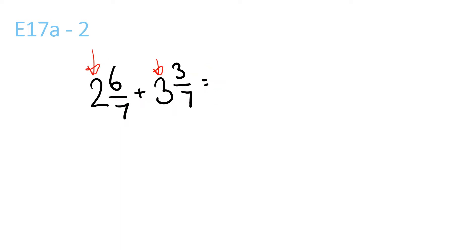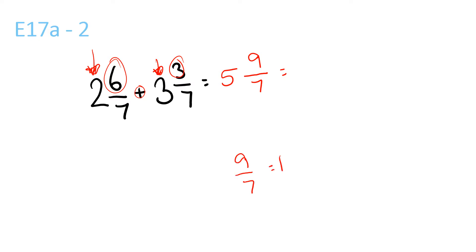2 plus 3 is 5, over 5. And 6 plus 3 is 9 over 7, which is equal to 1 and 2 over 7, because 7 goes into 9 once, remainder 2 over 7. So you get 1 and 2 over 7.